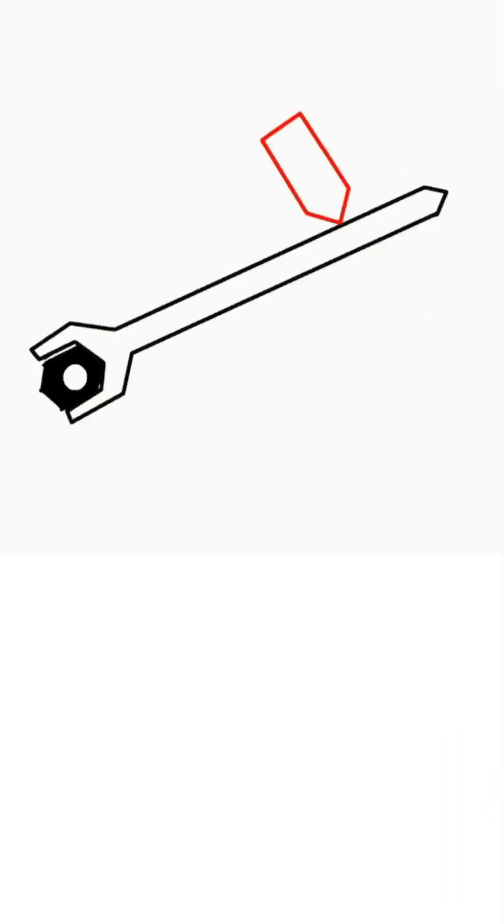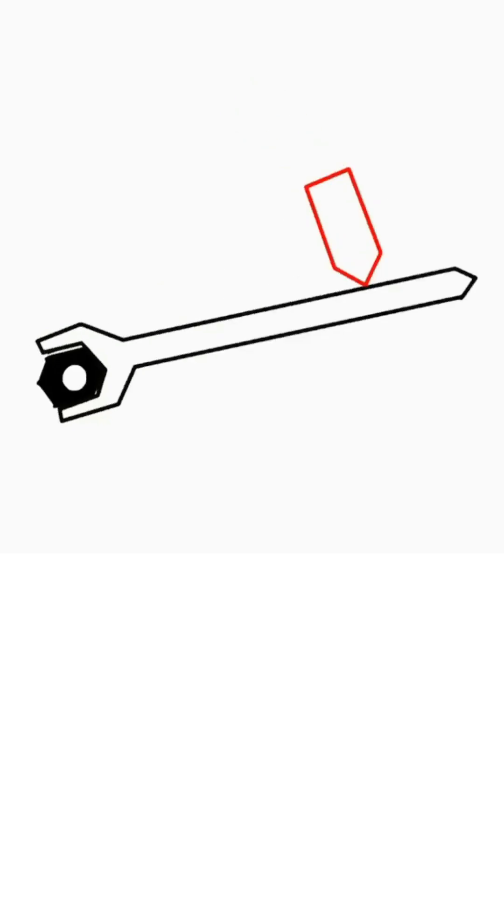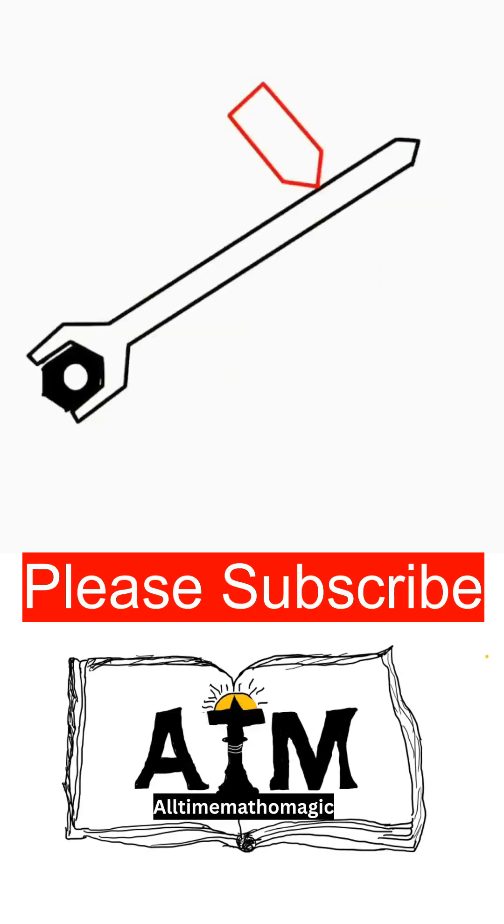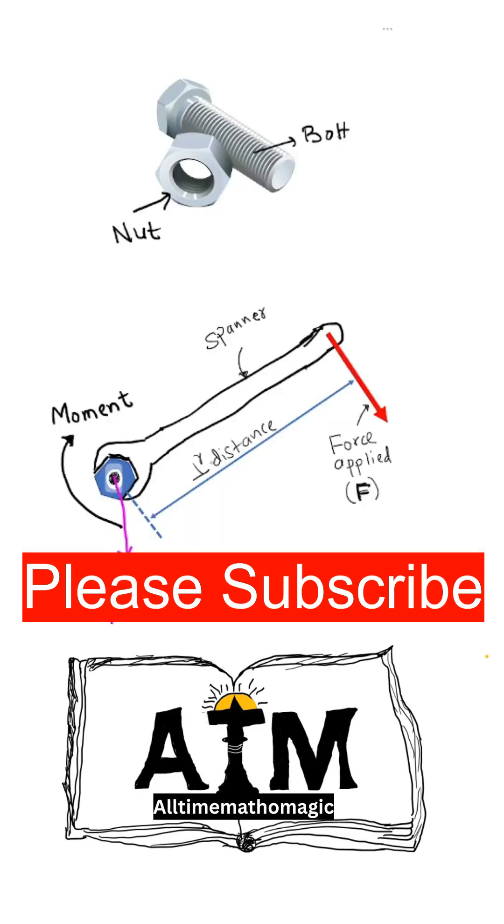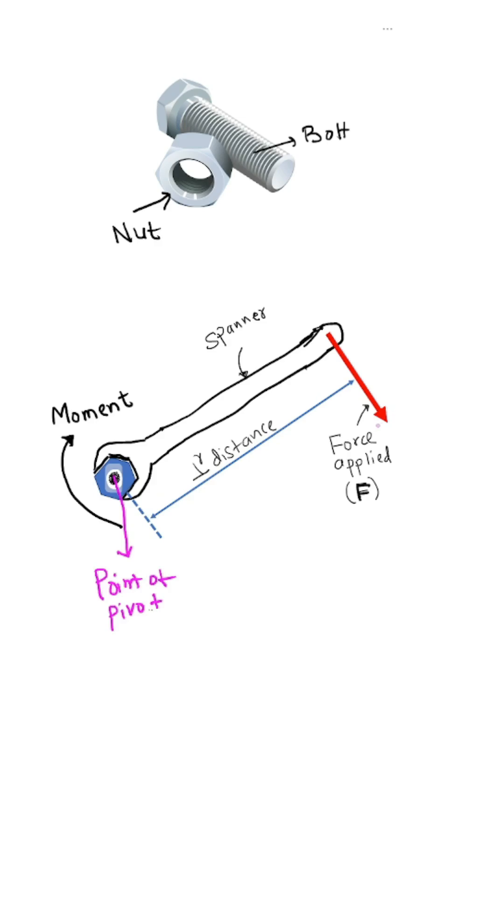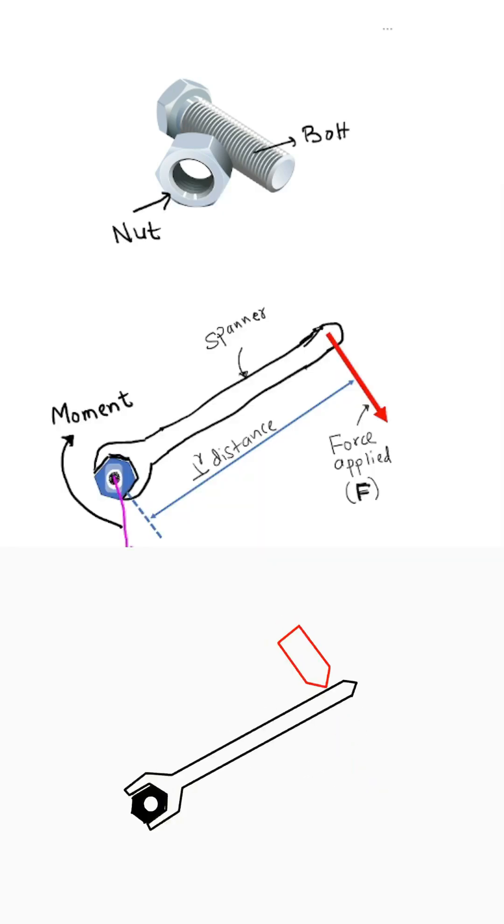To open the nut from the bolt, we use a spanner. On the spanner, we apply force so that the nut comes out of the bolt. As soon as we apply force on the spanner, the nut rotates. There is a rotational effect in the nut. The nut rotates about the bolt, and the bolt can be called the point of pivot.